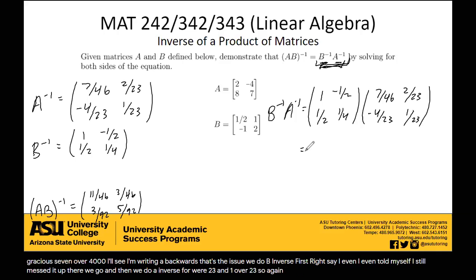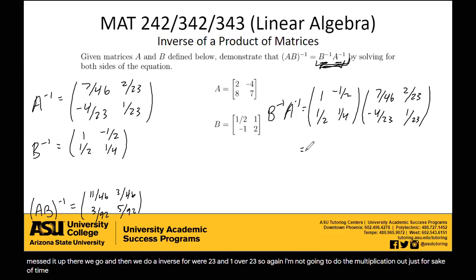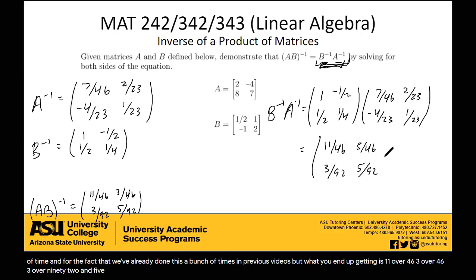Negative 4 over 23 and 1 over 23. So again, I'm not going to do the multiplication out just for sake of time and for the fact that we've already done this a bunch of times in previous videos. But what you end up getting is 11 over 46, 3 over 46, 3 over 92, and 5 over 92. You can go ahead and verify that for yourself. I'll do it at home.